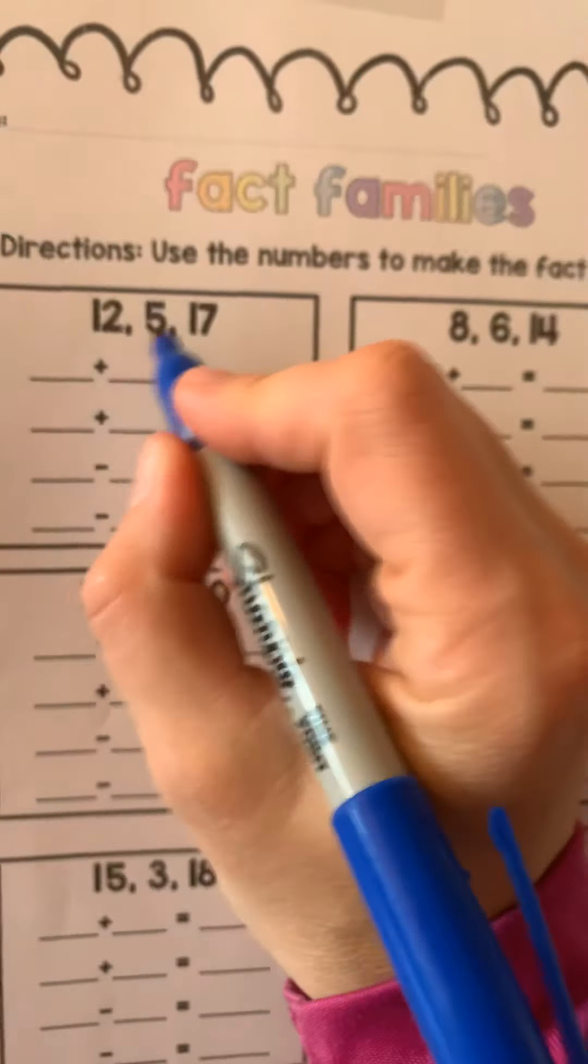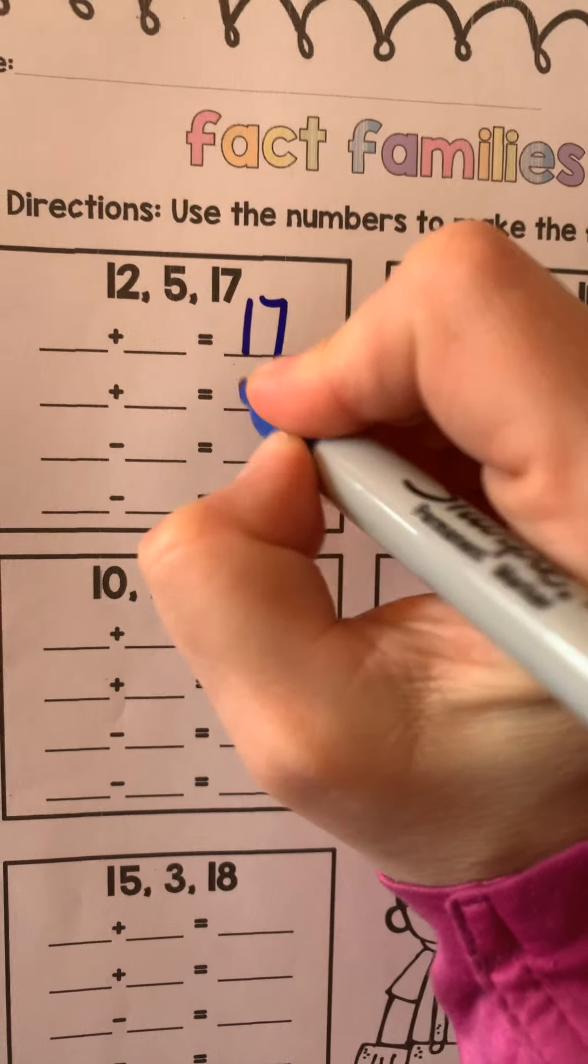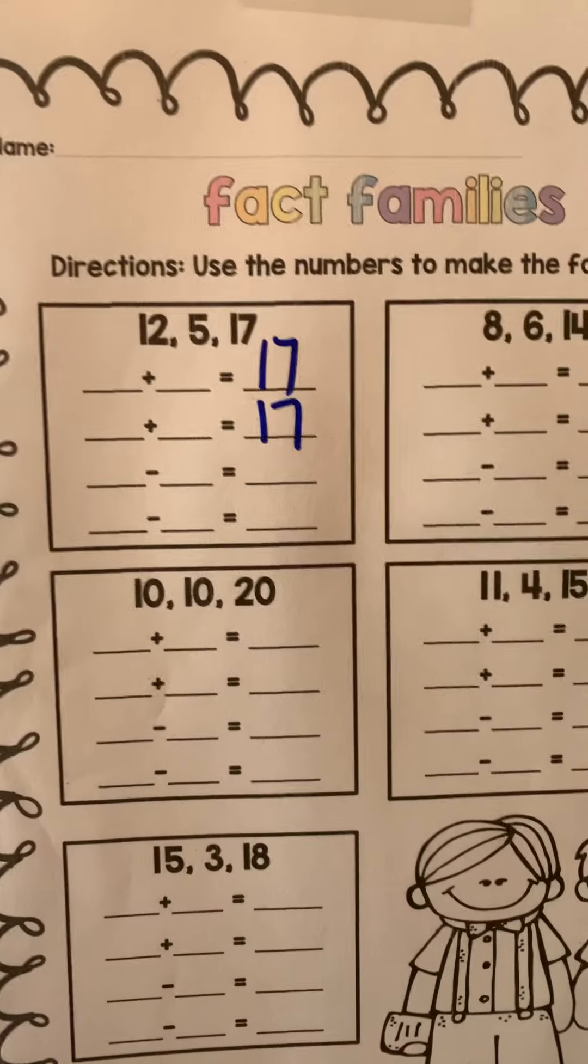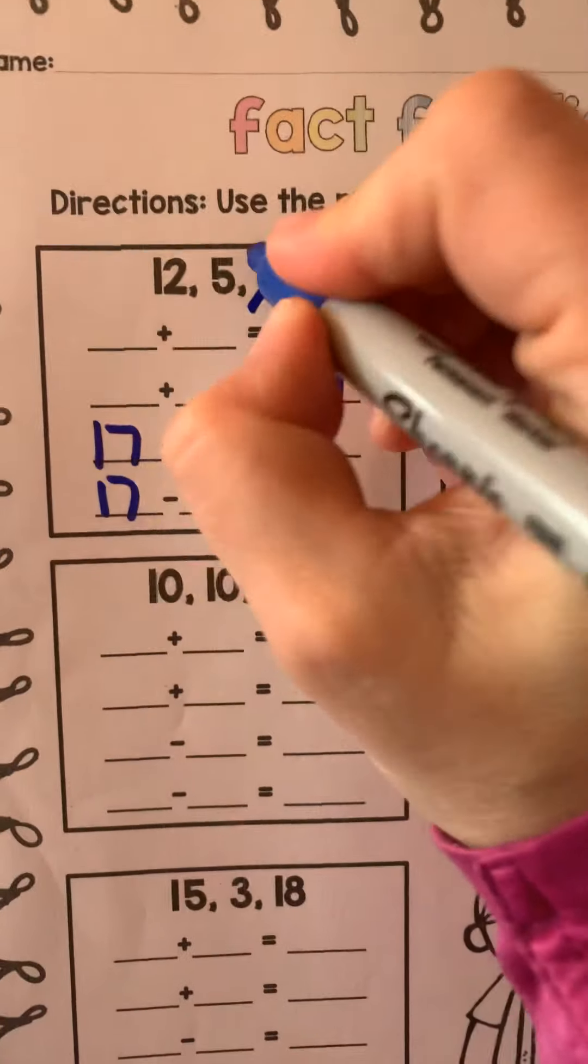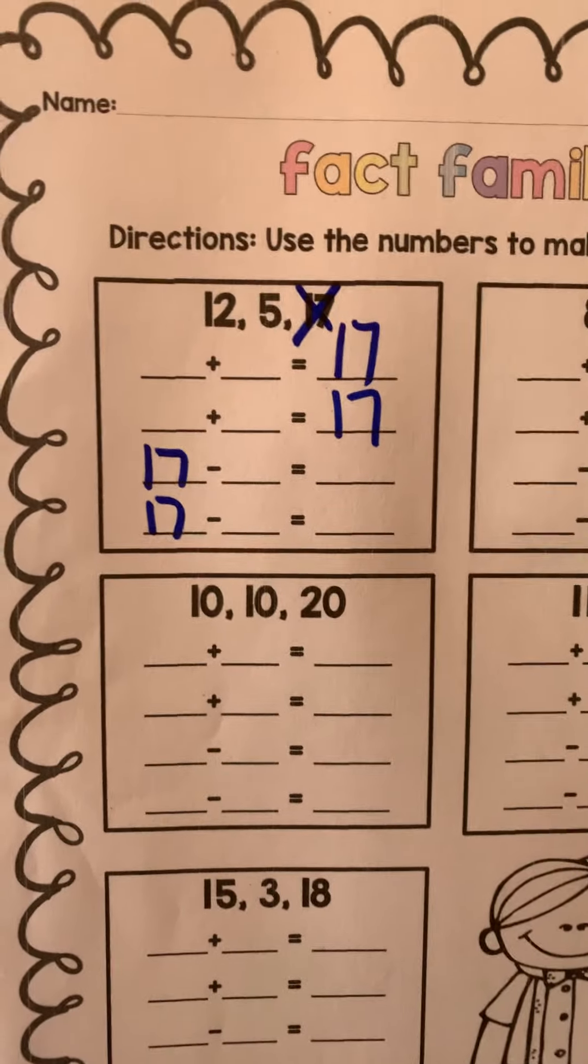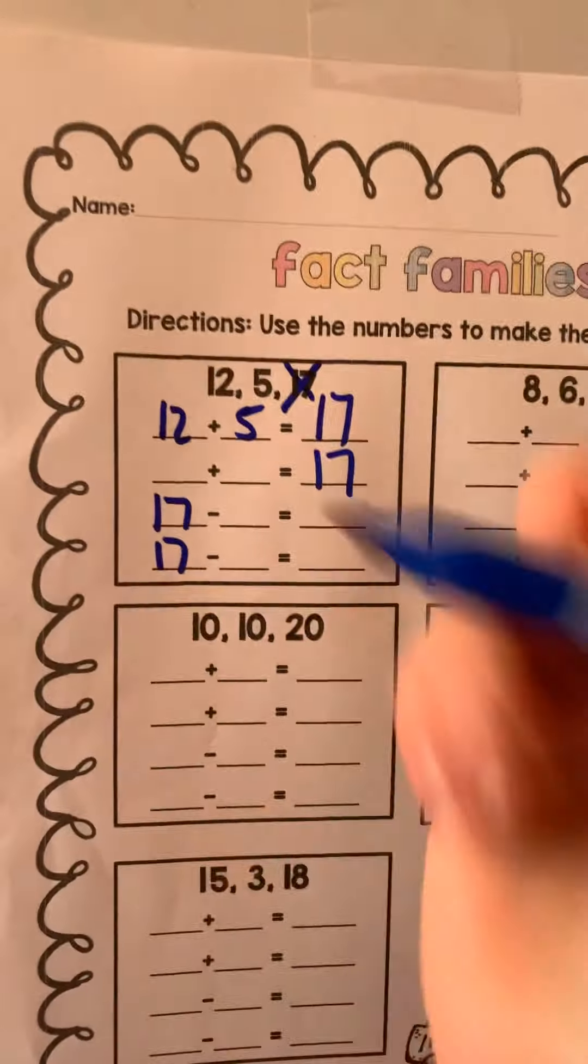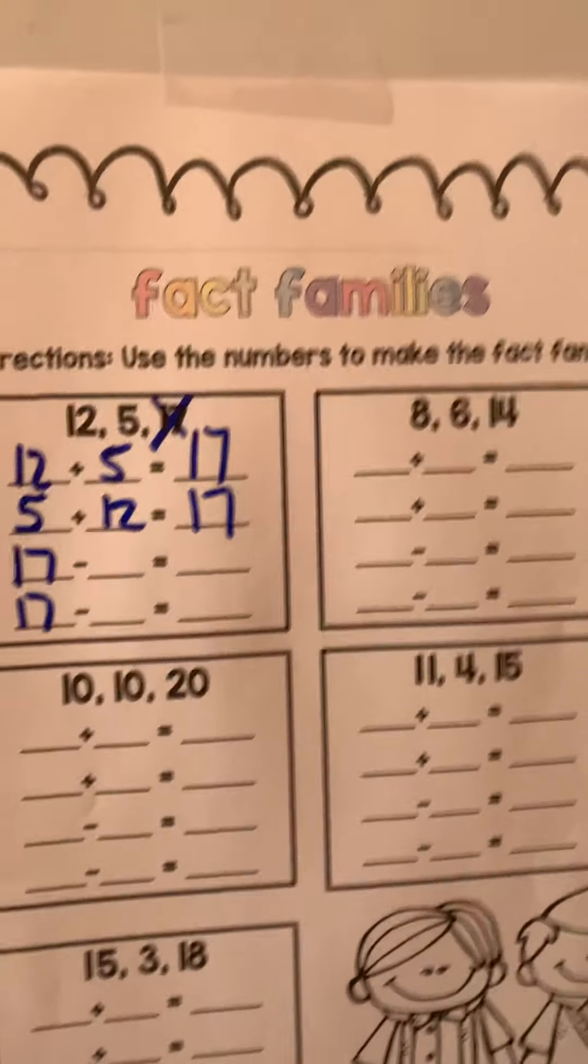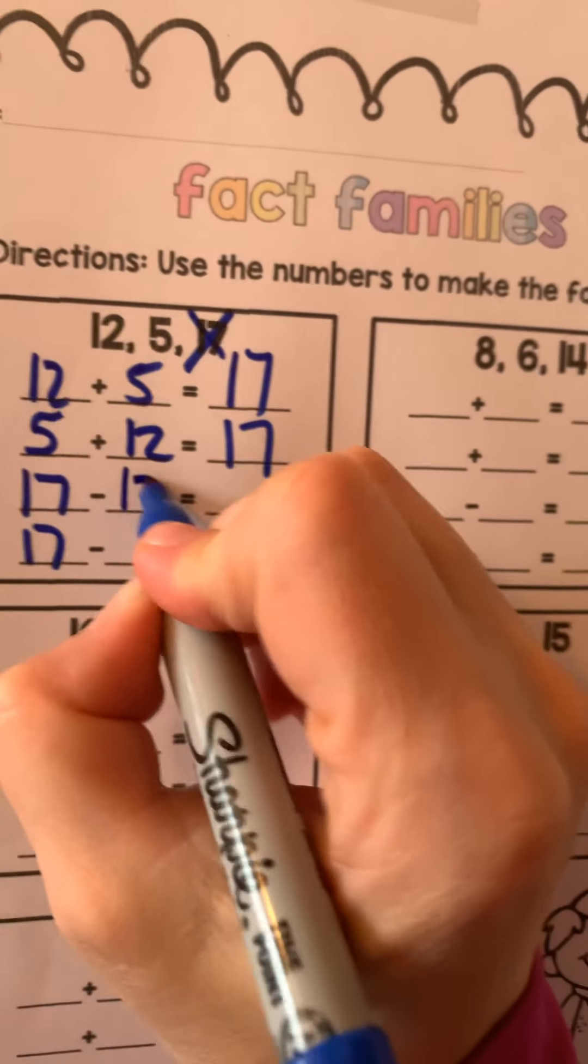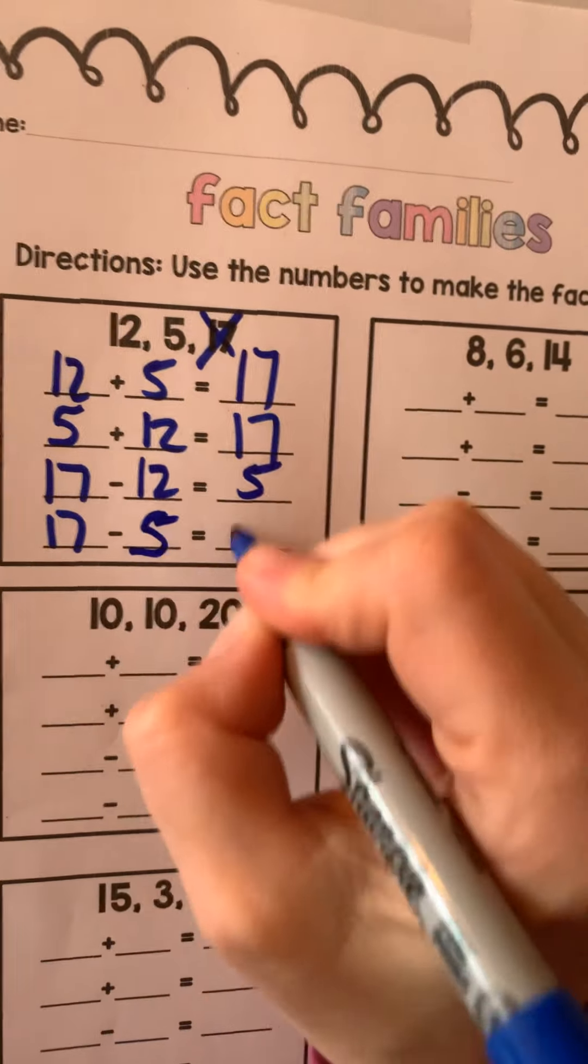So we have 12, 5, 17. What is our biggest number? 17. And we know subtraction starts with the biggest number, so you might as well get your 17, get those all set up, cross it out, and what do we have left? We have 12 and 5. So 12 plus 5 is 17. Flip it. 5 plus 12 is 17. Now use the same numbers again. 17 minus 12 is 5. Flip it. 17 minus 5 is 12.